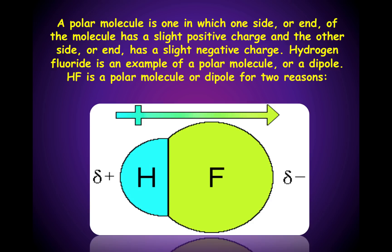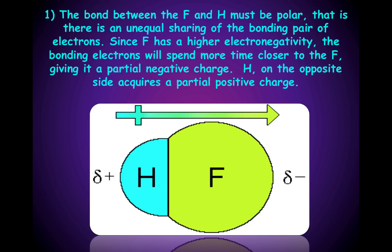Hydrogen fluoride is a polar molecule or dipole for two reasons. First, the bond between the fluorine and hydrogen must be polar covalent. That is, there is an unequal sharing of the bonding pair of electrons. Since fluorine has a higher electronegativity, the bonding electrons will spend more time closer to the fluorine, giving it a partial negative charge. Hydrogen, on the opposite side, acquires a partial positive charge. So the first thing necessary for a molecule to be polar is that there must be polar bonding.